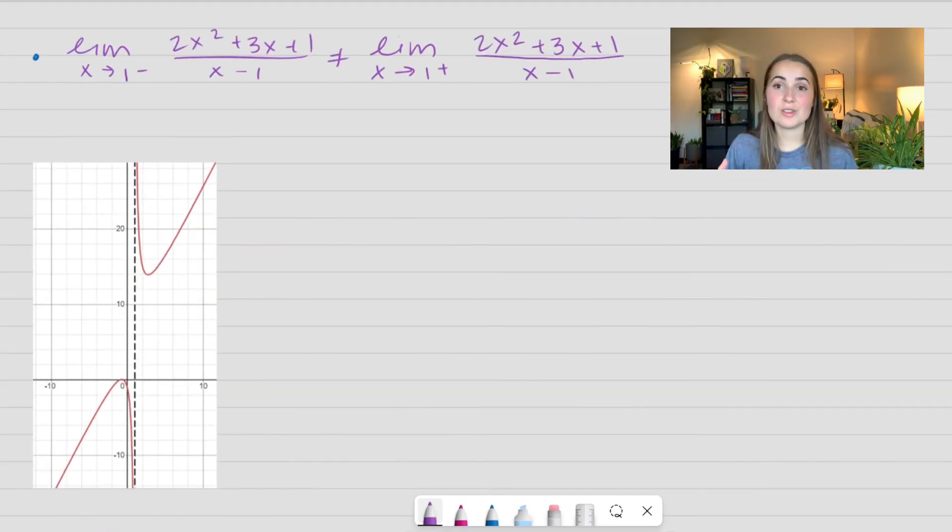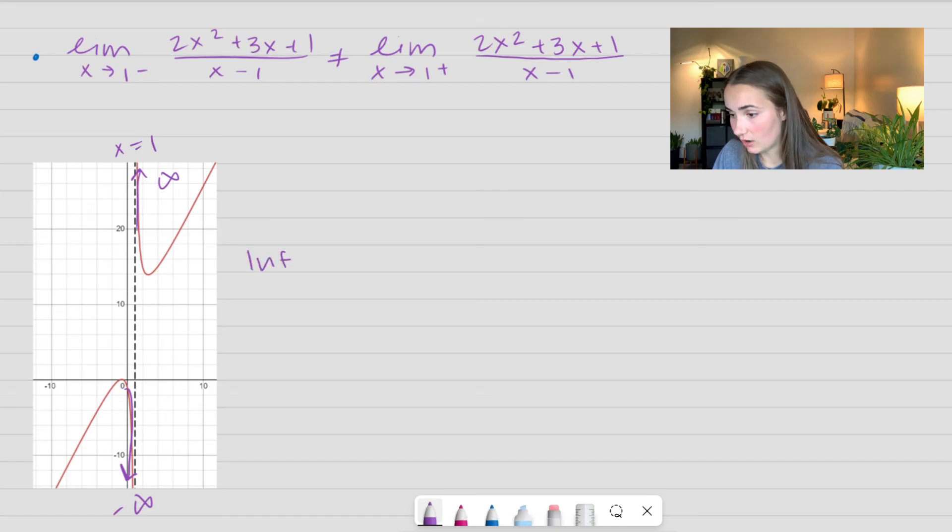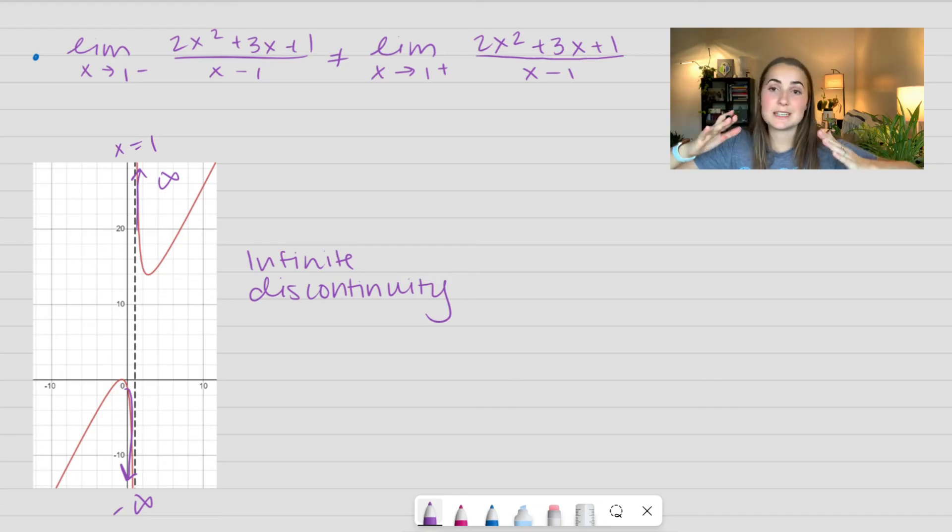So we have these two limits are not equal, so they're not continuous. Let's take a look at what this looks like on the graph. So we have a vertical asymptote at x is equal to 1. We have as x approaches 1 from the left side, we're going down to negative infinity. And on the right side, we're going up to positive infinity. This is called an infinite discontinuity. Because they're approaching two different infinities, sometimes they approach the same infinity, but whenever there's that vertical asymptote, we have an infinite discontinuity.